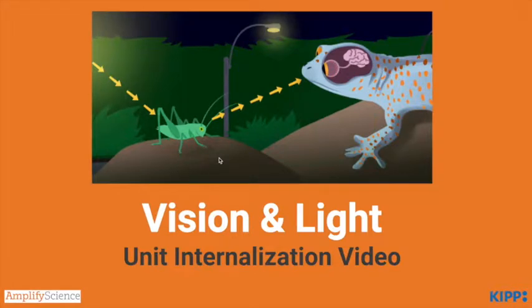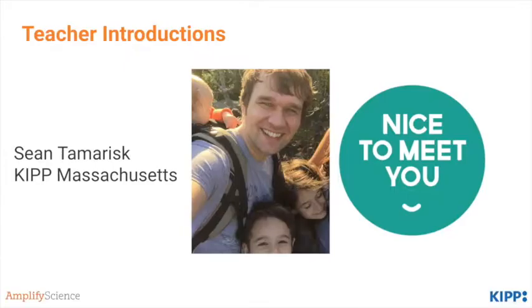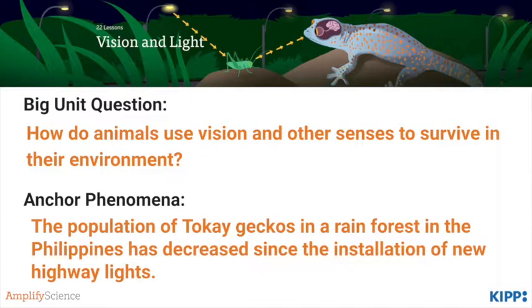Hello and welcome to the vision and light unit internalization video. My name is Sean Tamarisk of Kip, Massachusetts. For this unit, the big unit question is: how do animals use vision and other senses to survive in their environment? The anchor phenomena is a population of tokay geckos in a rainforest in the Philippines has decreased since the installation of new highway lights.